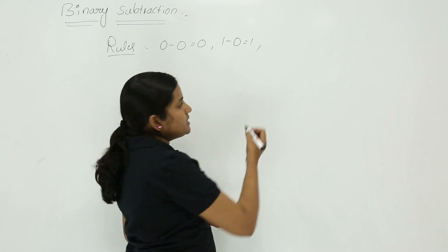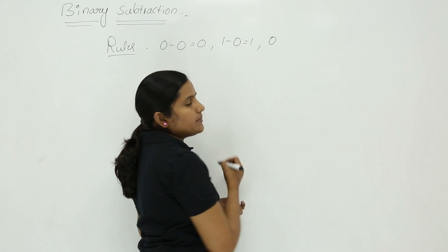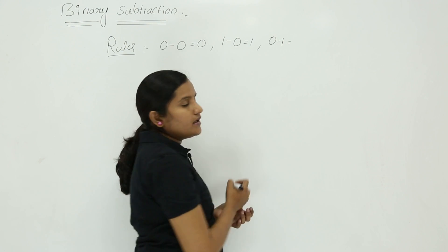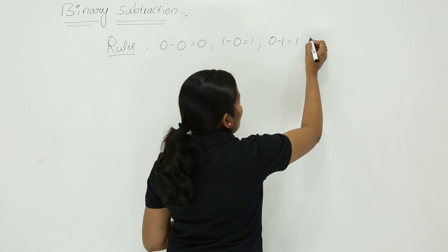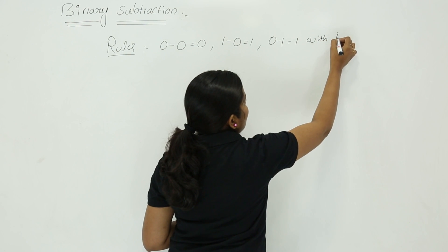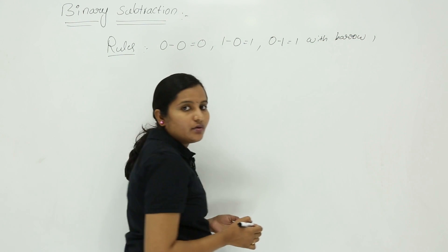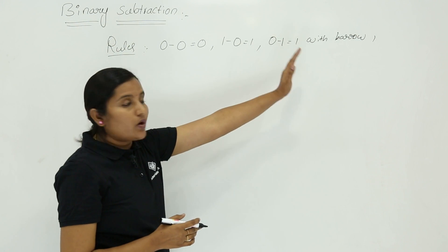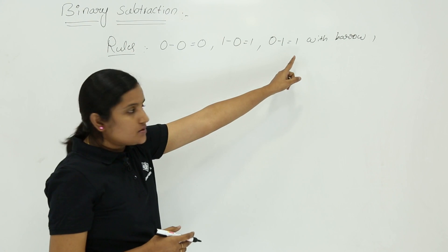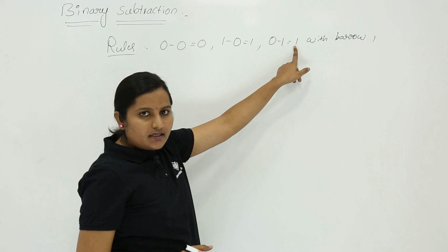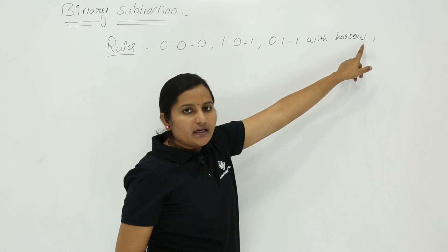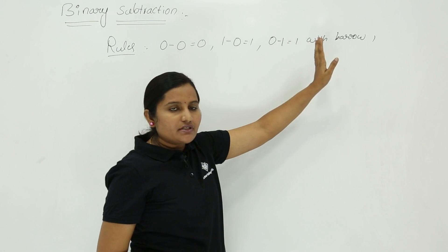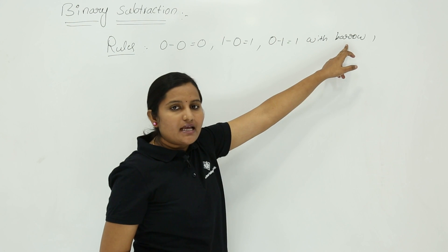The third rule is: if you are subtracting 1 from 0 — that means 0 minus 1 — then the result is 1 with borrow 1. The subtraction result is 1 and borrow is 1. Here we are not calling this a carry; in the case of subtraction, we have to call this a borrow.